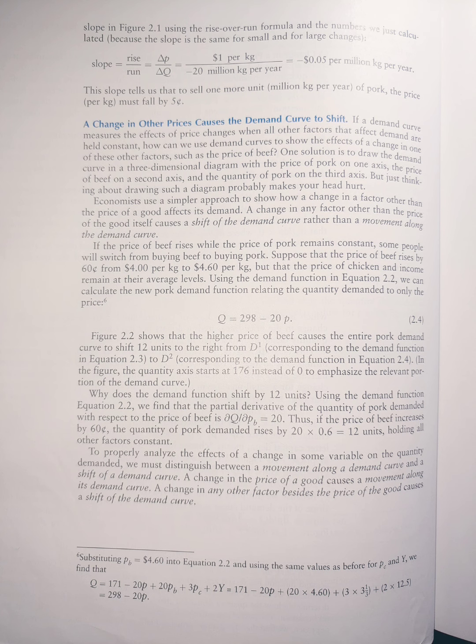This equals 171 minus 20p plus open parenthesis 20 times 4.60 close parenthesis plus 3 times 3.0 plus 2 times 12.5 close parenthesis, which equals 298 minus 20p. Capital Q equals 298 minus 20p. That's equation 2.4.